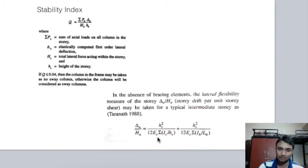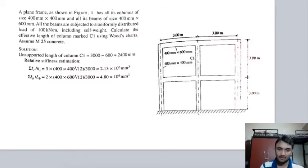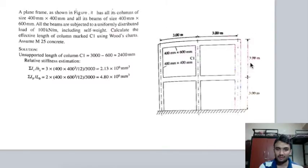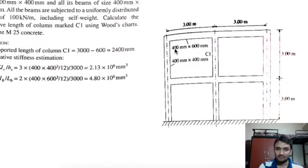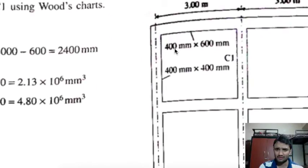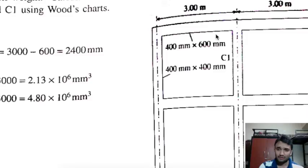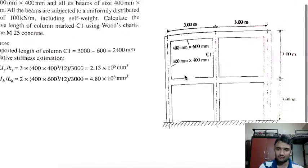Ec is the Young's modulus of concrete = 5000√fck. Now we look at an example to calculate the effective length of a column. We have a two-bay frame with spans of 3 m × 3 m and two stories of 3 m height each. The center column spacing is 3 m. Beam dimensions are 400 × 600 mm and column dimensions are 400 × 400 mm.